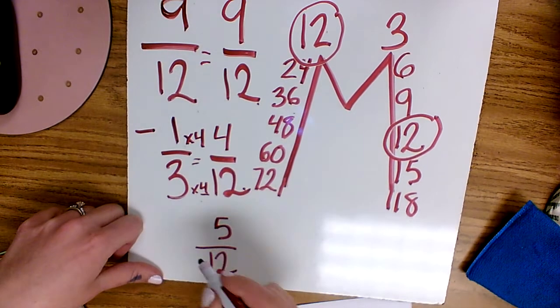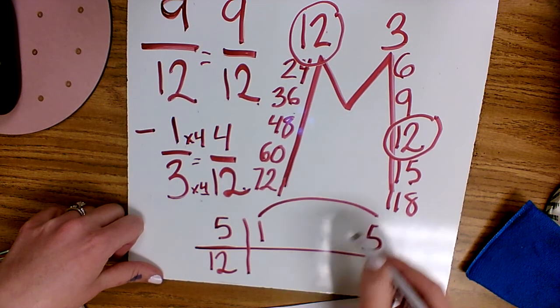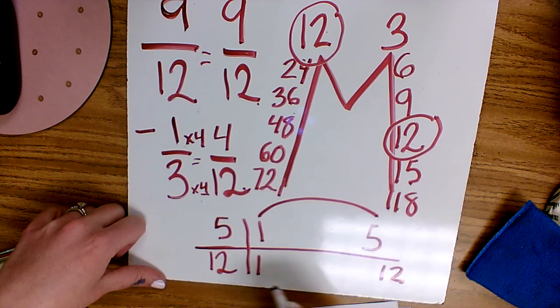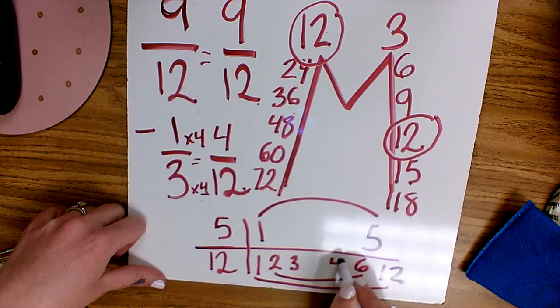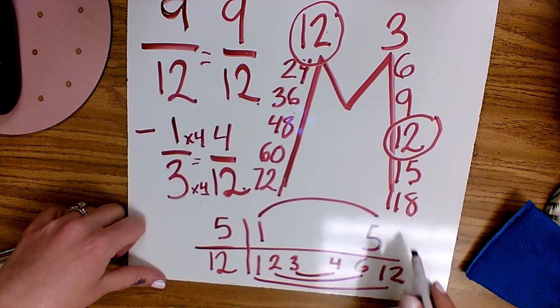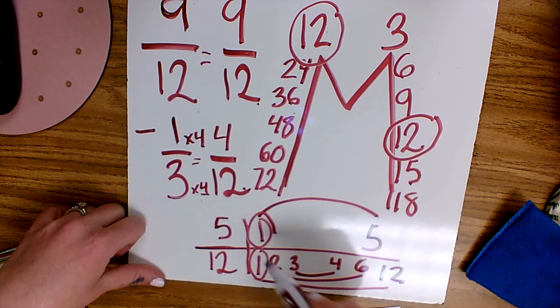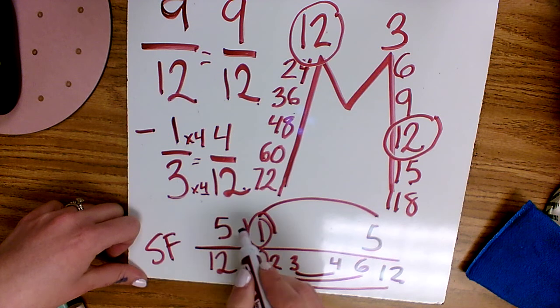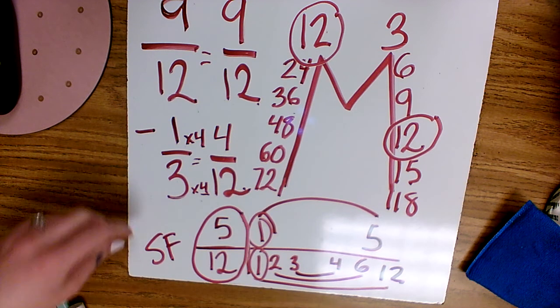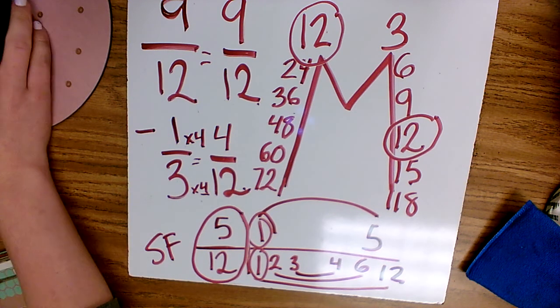As always, I double check to see if I can reduce the fraction by writing out all my facts. This is a great way to study your multiplication facts as well. And then seeing what the GCF is. In this one, my greatest common factor is one, so I know that five-twelfths is in simplest form and it's already reduced. My final answer for nine-twelfths minus one-third is five-twelfths.